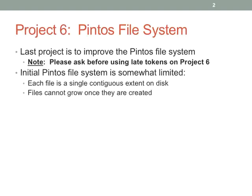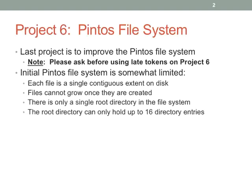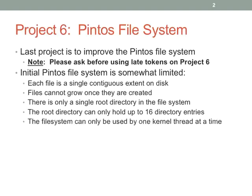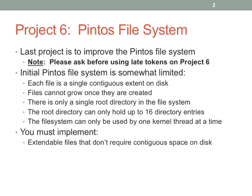The initial Pintos file system has all these limitations. Files are basically a single contiguous extent and they can't grow once they're created — two things you have to resolve. There's only a single root directory in the file system, and it can hold a tiny amount of directory entries — up to 16 entries. The file system is also not thread-safe; you can only use it by one kernel thread at a time.